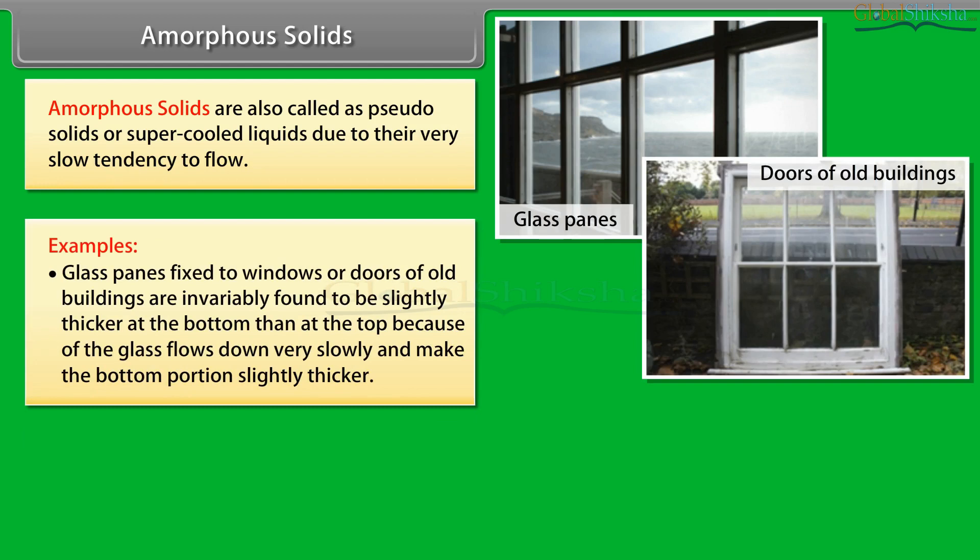Glass panes fixed to windows or doors of old buildings are invariably found to be slightly thicker at the bottom than at the top because the glass flows down very slowly and makes the bottom portion slightly thicker.